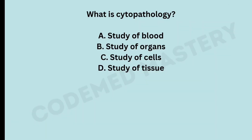What is cytopathology? Option A: study of blood. Option B: study of organs. Option C: study of cells. Option D: study of tissue. The right answer is option C, study of cells. Option A is wrong because the term for study of blood is hematology. The term for study of organs is anatomy, and the term for study of tissue is histology. So cytopathology means study of cells.